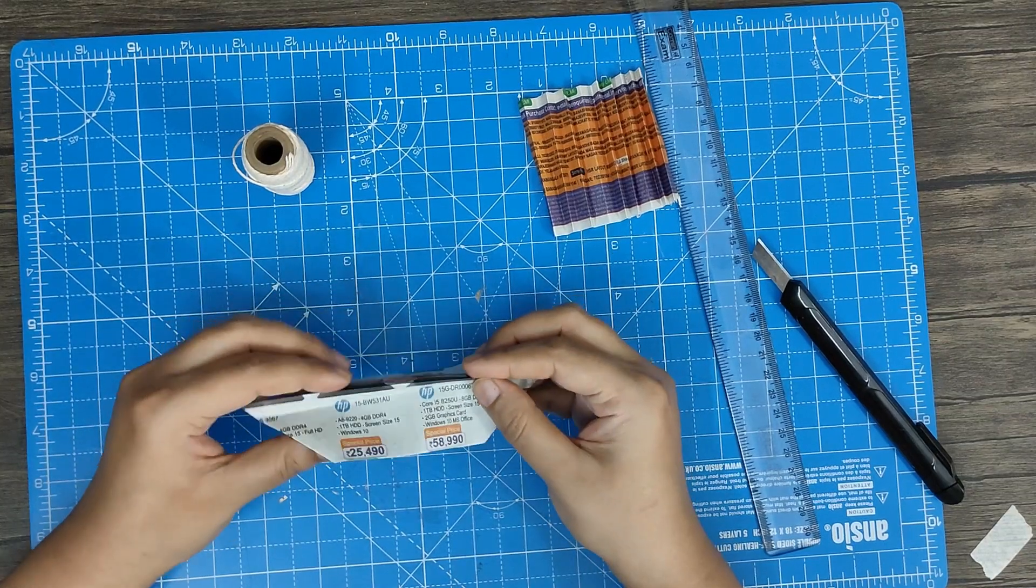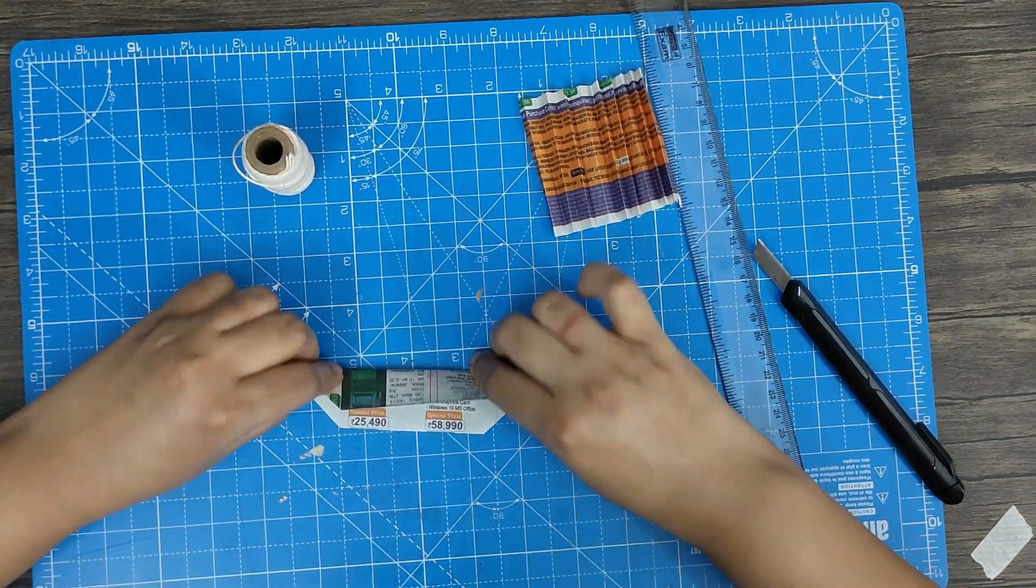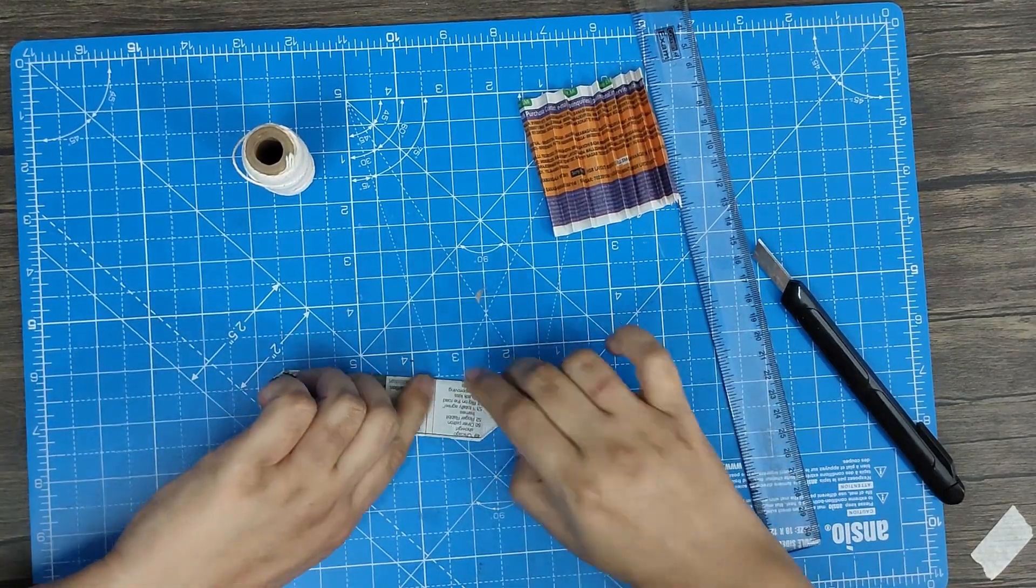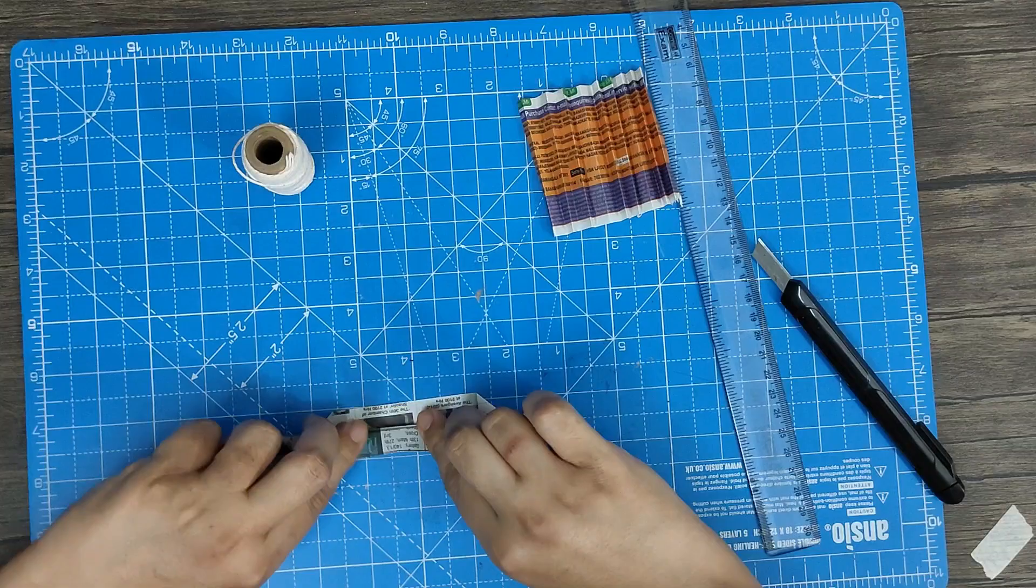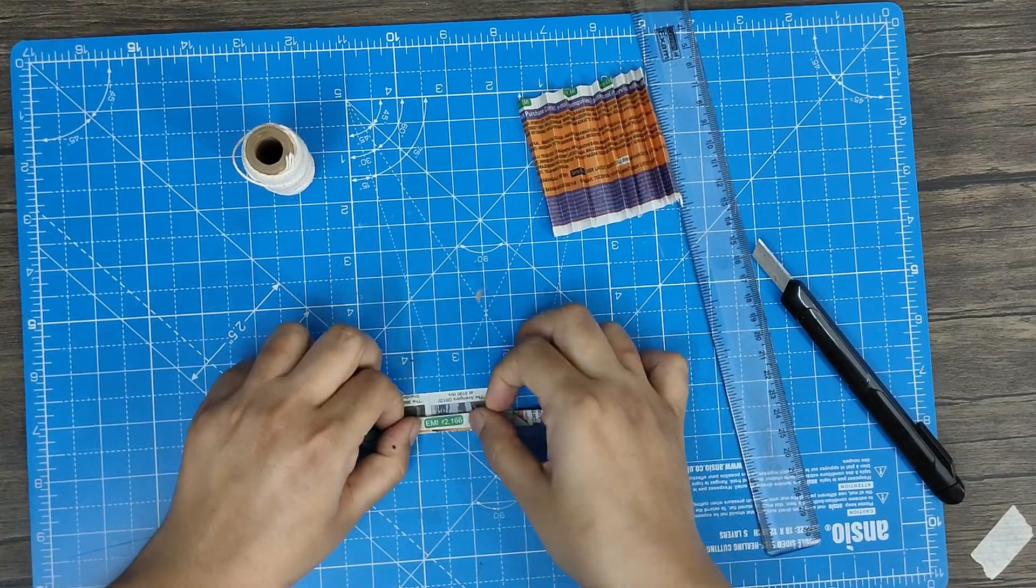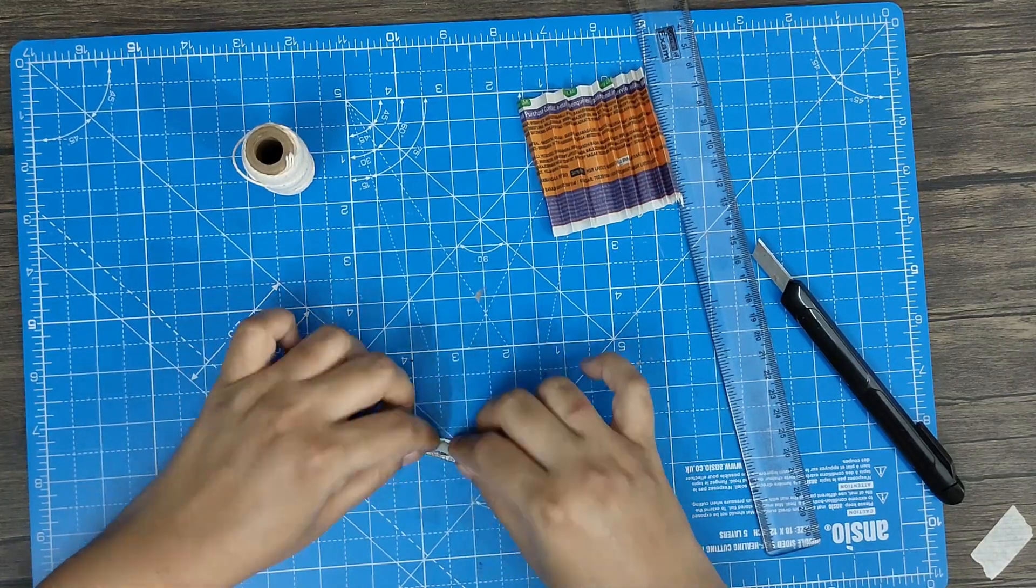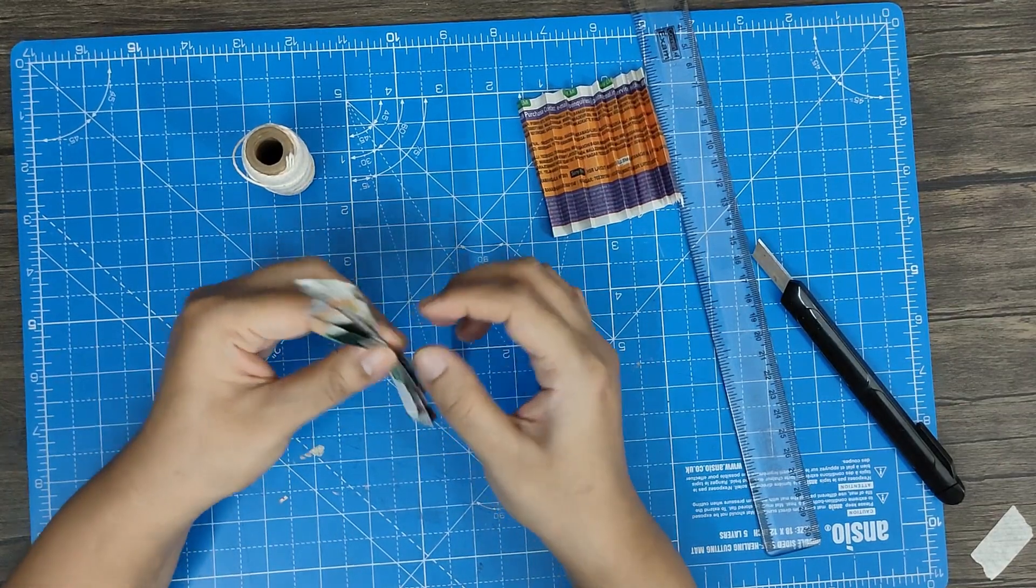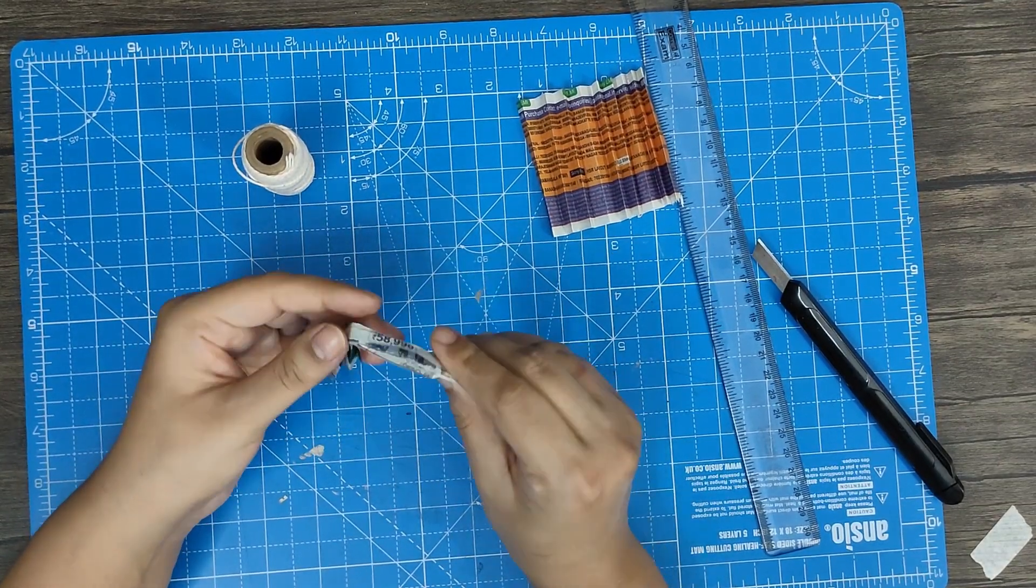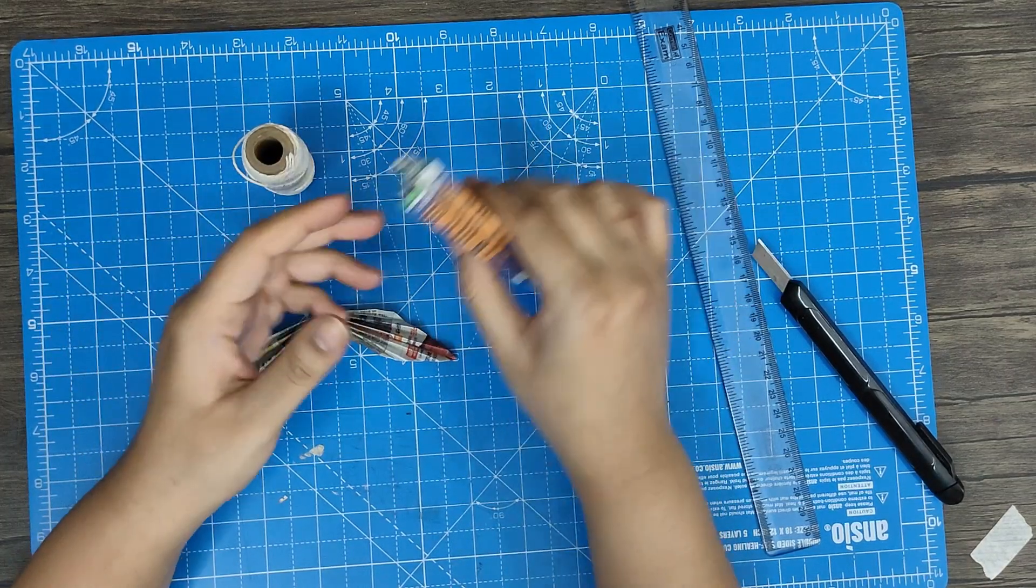To make sure that the width is the same, I'm going to fold this side and this side in parallel. Once this is done, just fold it in half like this, and this one as well.